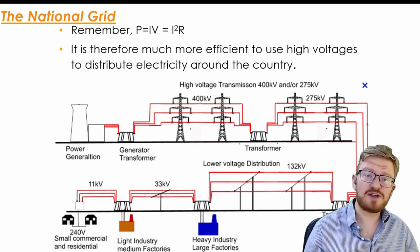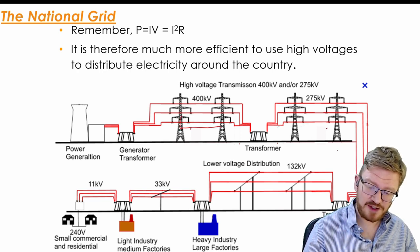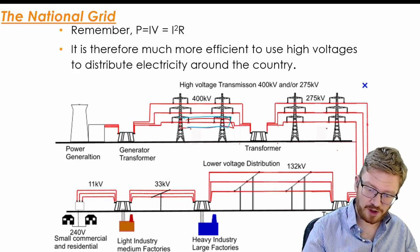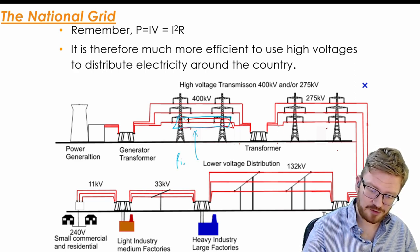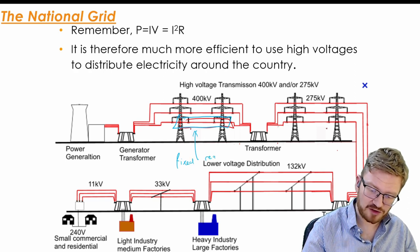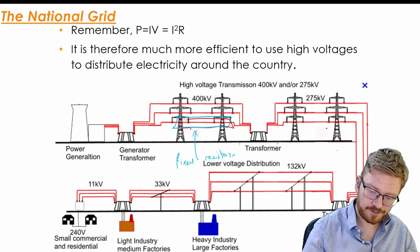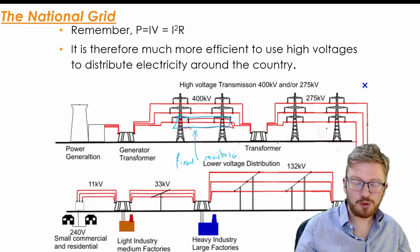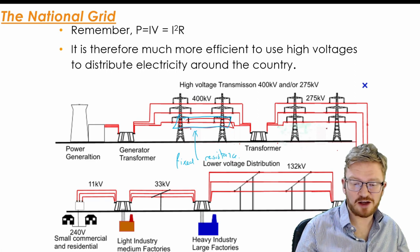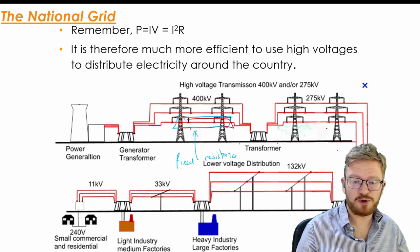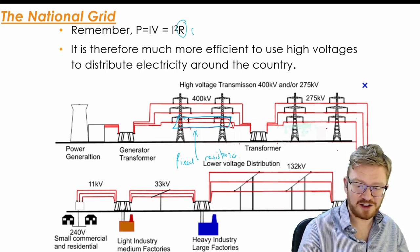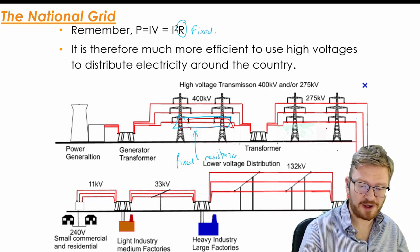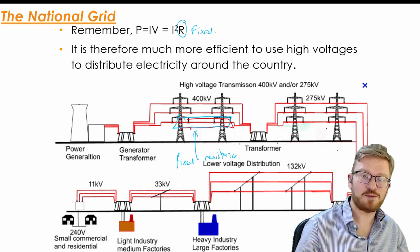So if we think about moving electricity around a country, well, these wires—let's use a different colour so you can see it—the wires that are carrying it, they will have a fixed resistance. So because the resistance is fixed, what we can say is we want to have as low a current flowing through them as possible, because as this R isn't changing, the only way that we can reduce the power in the wires is by reducing current.